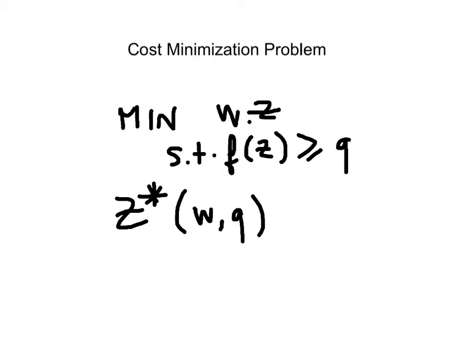The value function here is the cost function C, which is a function of prices and output level, which you get simply by plugging in the solution. The Z* is being plugged into the objective function that we're trying to minimize.